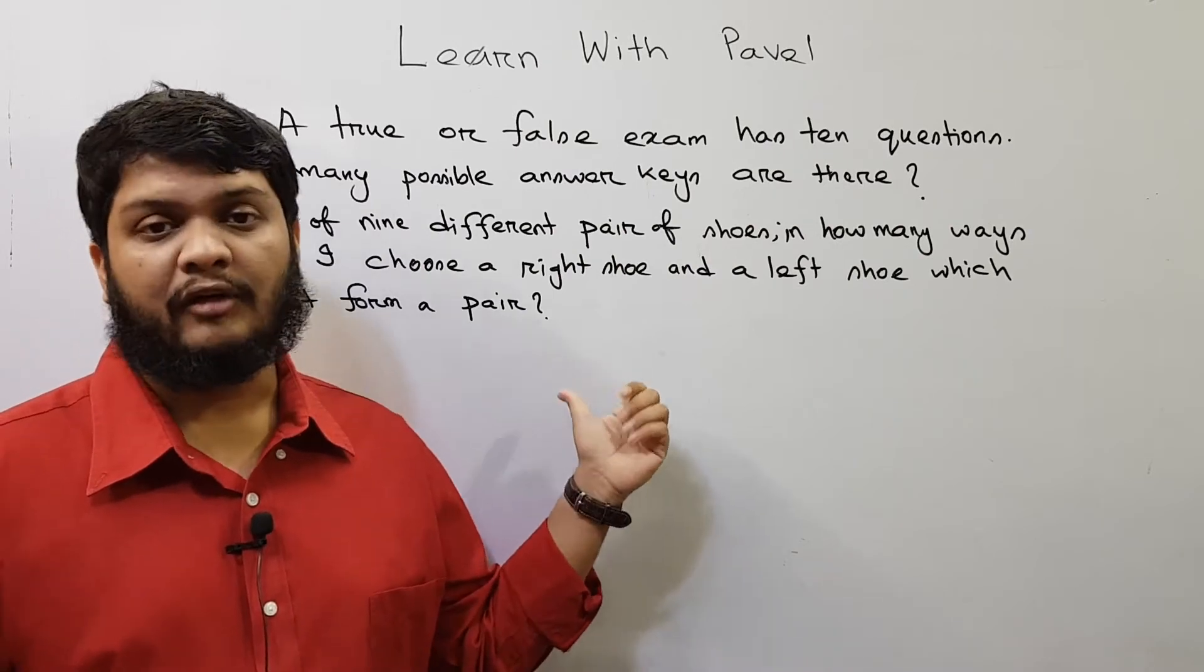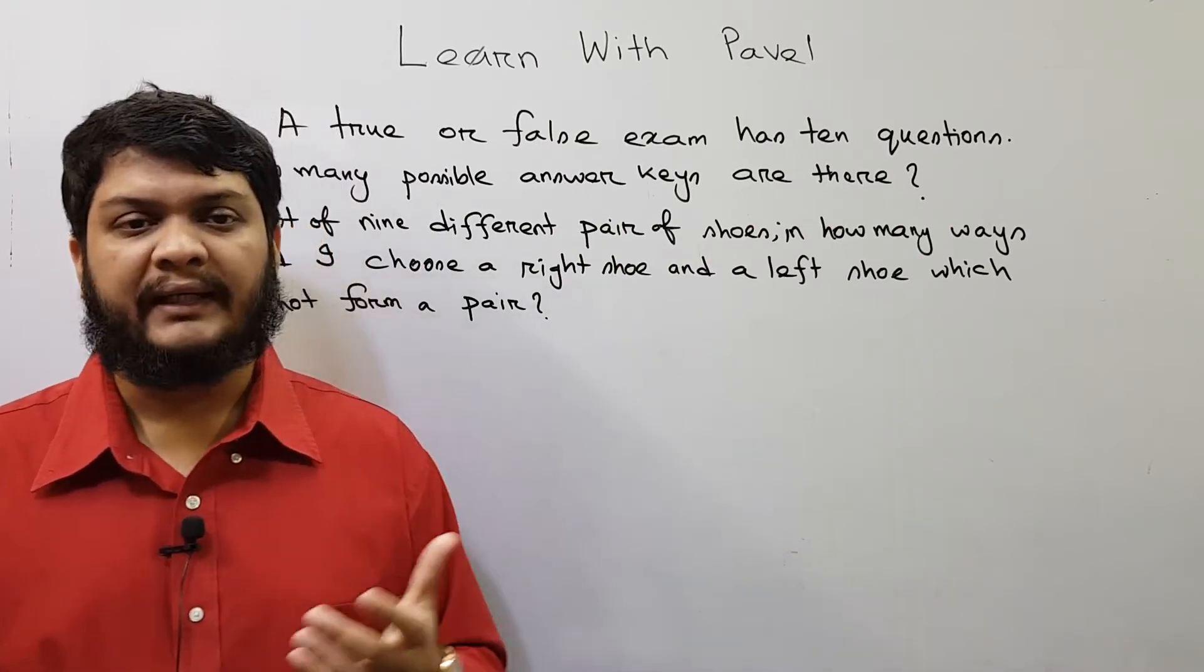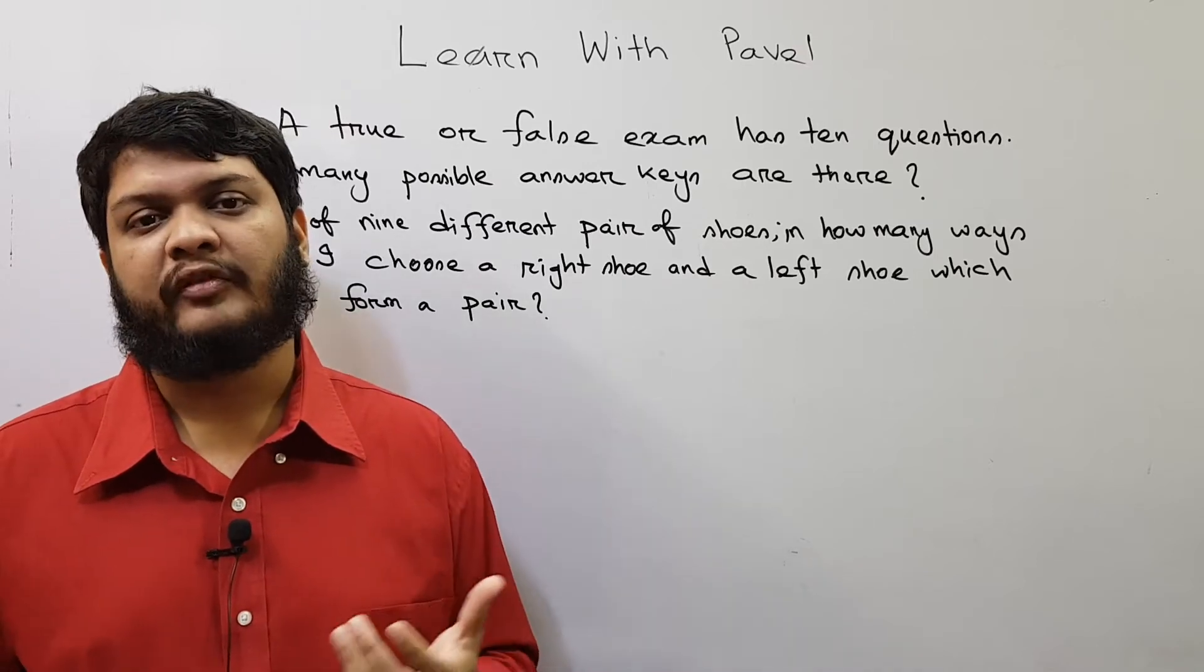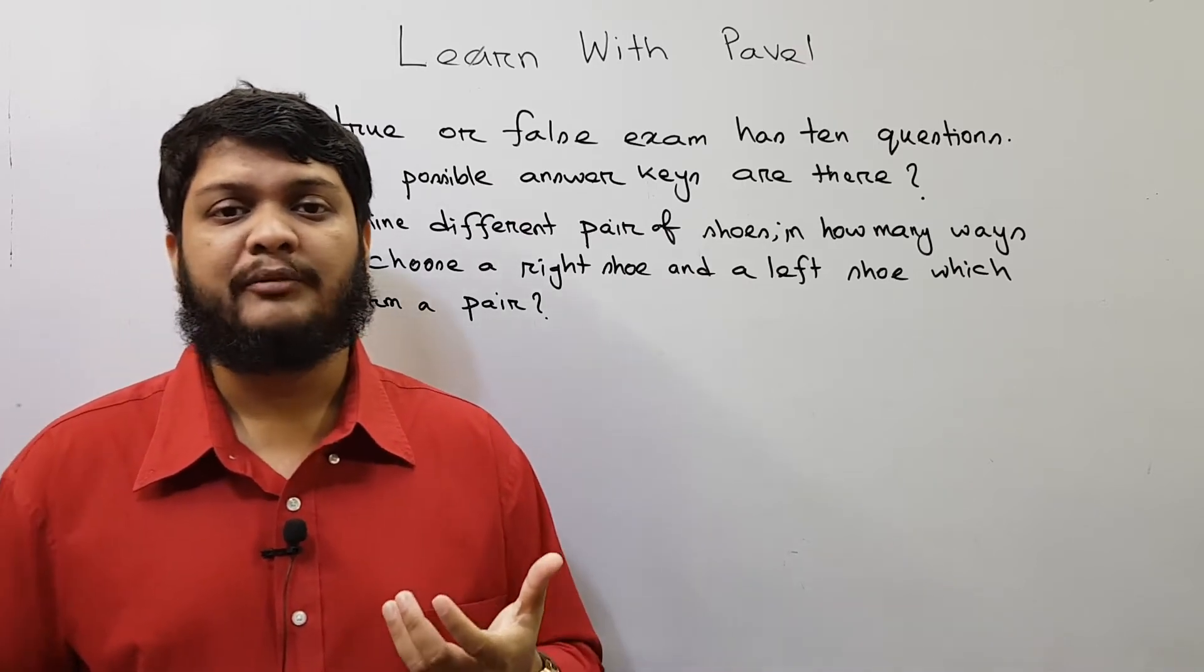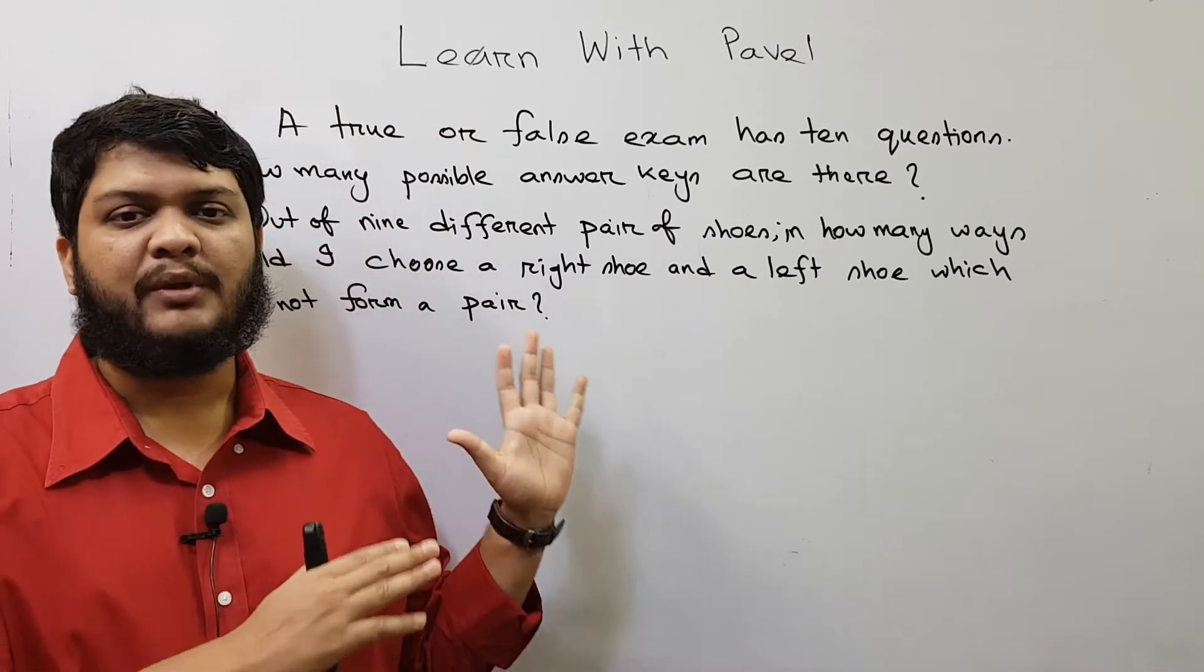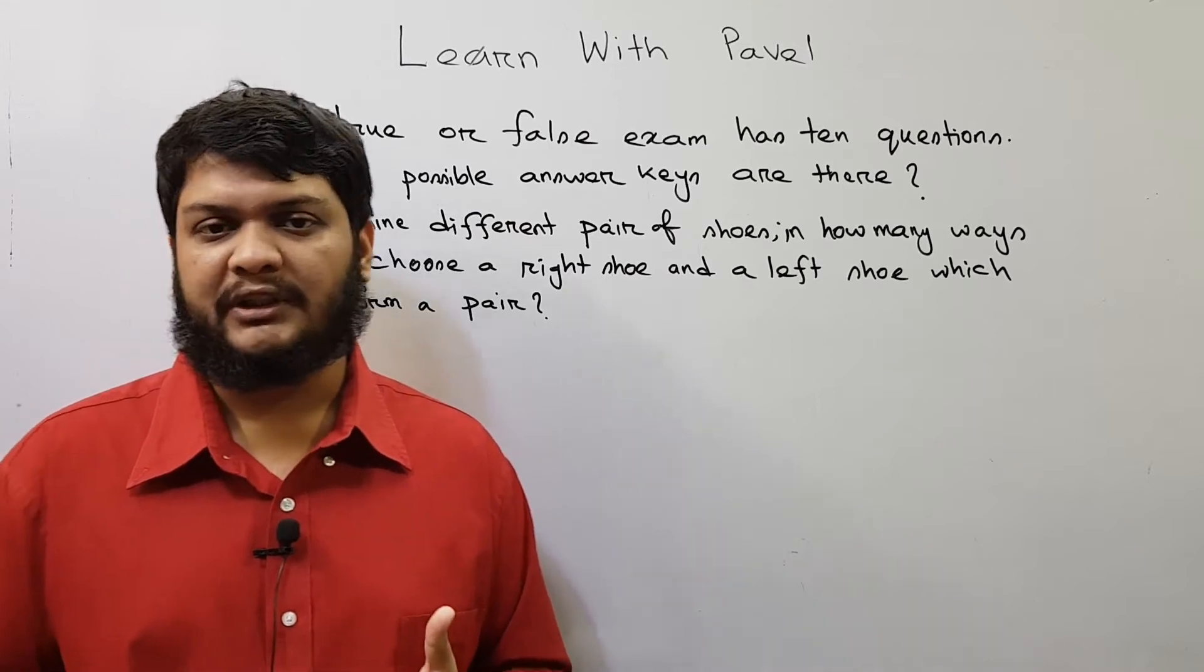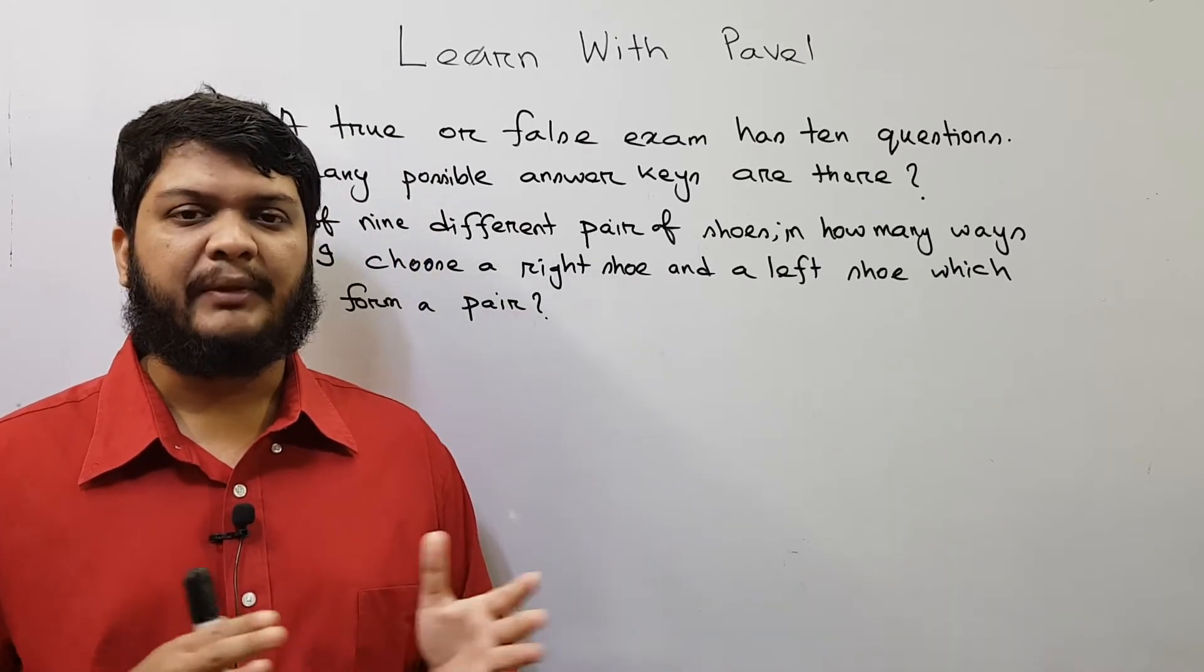Before going into the details of this particular solution, let me tell you one thing. This problem is pretty easy for students who have some basic knowledge regarding permutation and combination. For them the problem will be very easy, but for those who do not have some ideas regarding permutation and combination, you might find it a bit difficult.